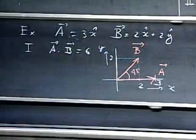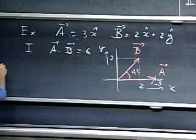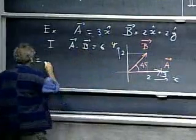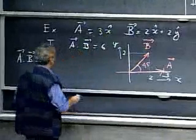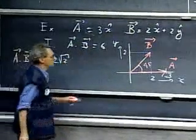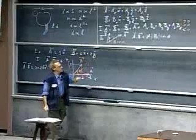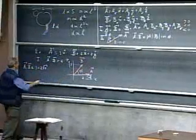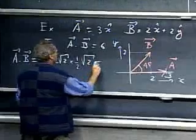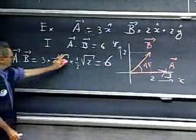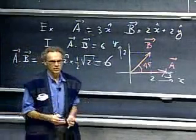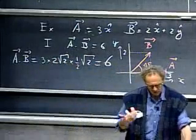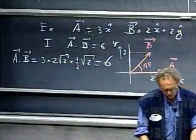So if we now apply method number two, A dot B, first the length of A, that's 3, times the length of B, that is 2 times the square root of 2. This is 2, this is 2, square root 2, times the cosine of 45 degrees, which is one-half square root 2, and the answer is 6. Notice that this square root of 2 and this square root of 2 eat up this 2, and you get 6. You get the same answer, of course, but it would be a dumb thing to do it, since it can be done so much easier.